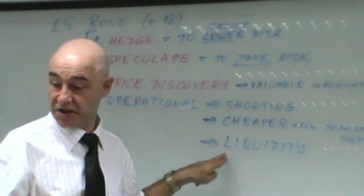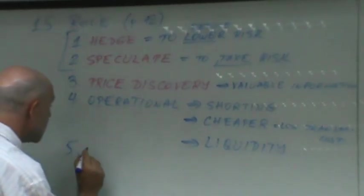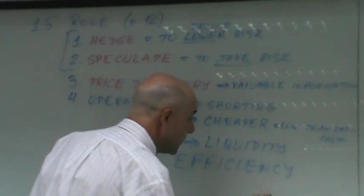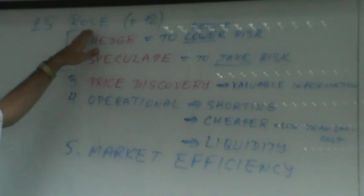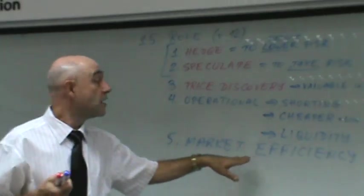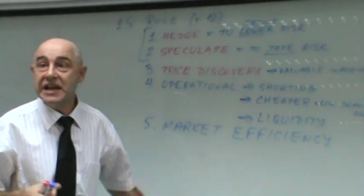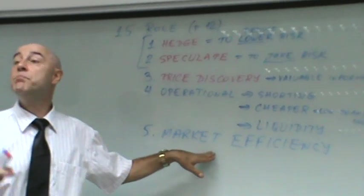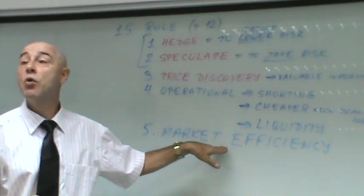The futures market provides better liquidity than the spot market. And the last role is market efficiency. One of the main roles of financial derivatives is to make markets more efficient. If someone is shorting stock index options or futures, that provides extra information both to the futures market and the stock market, bringing in extra information and making markets more efficient.